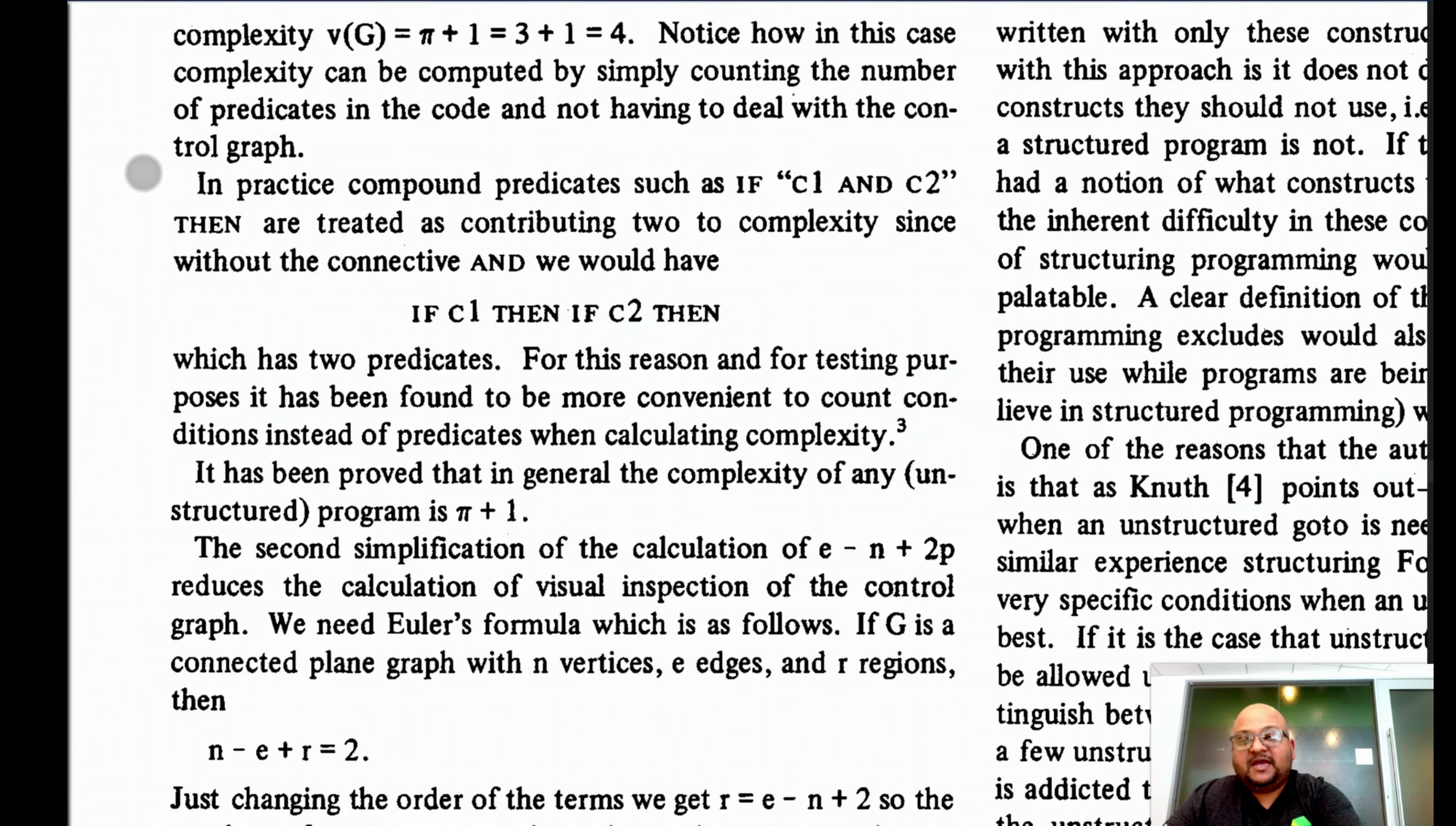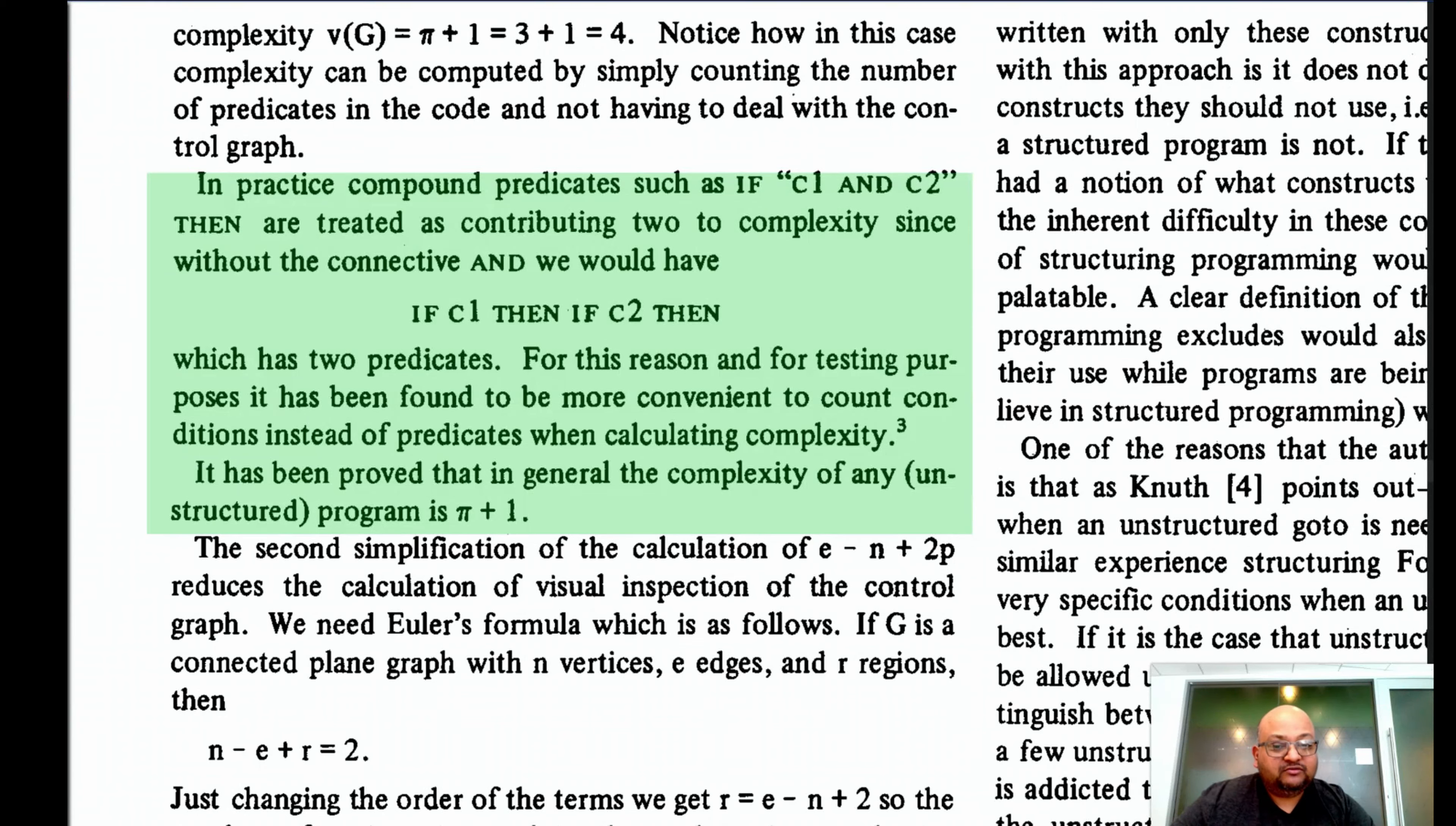Here the author makes an important clarification, which is that if an if statement uses two predicates within its condition, we should count that as adding two to the cyclomatic complexity, not just adding one. And the reason is that each of those predicates adds a decision point by itself.